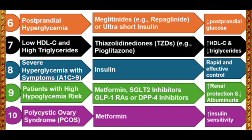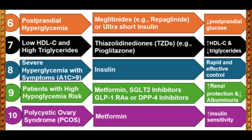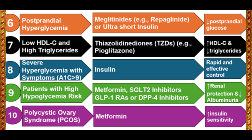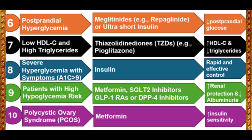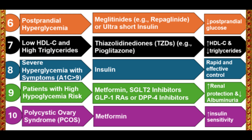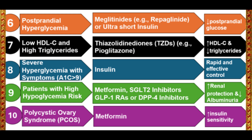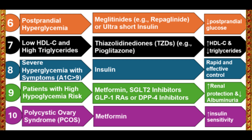Case 9 – Patients with High Hypoglycemia Risk. To minimize hypoglycemia risk, consider SGLT-2 inhibitors, GLP-1 receptor agonists, or DPP-4 inhibitors. These agents have a low hypoglycemia risk profile.